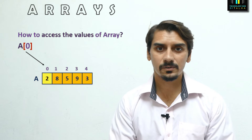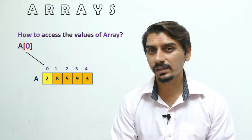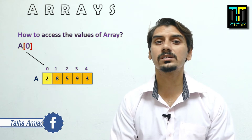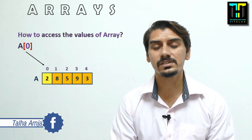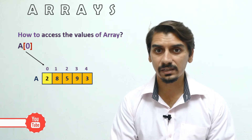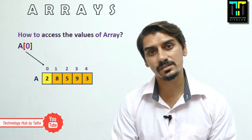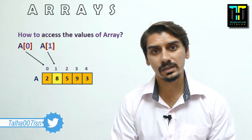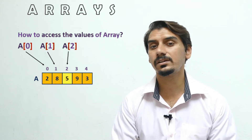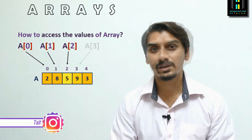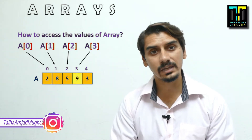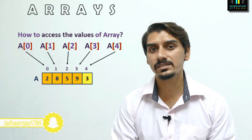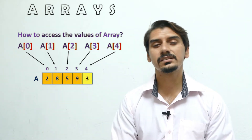Now let's see how we access these elements from this array. We access elements one by one using index numbers. After the name 'a' we use the index number. So a[0] means the value at index 0, which is 2. a[1] gives us 8. a[2] gives us 5. a[3] gives us 9. And a[4] means the value at index 4, which is 3.